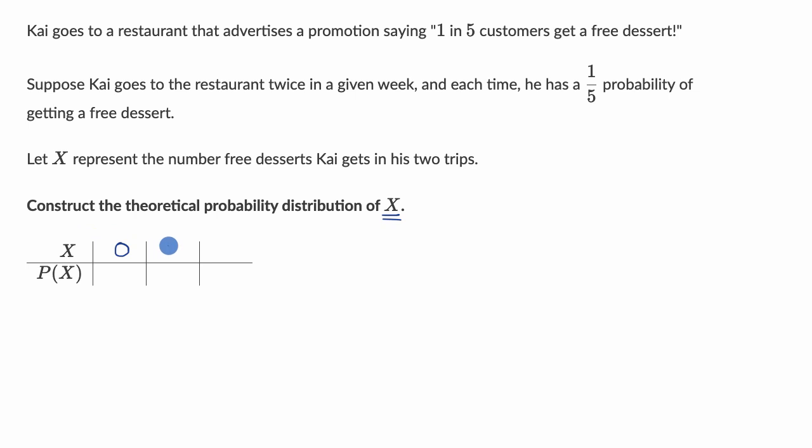Maybe on one of the visits he gets a dessert and the other one he doesn't. And maybe in both of his visits he actually is able to get a free dessert. So he's going to have someplace from zero to two free desserts in a given week. So we just have to figure out the probability of each of these.